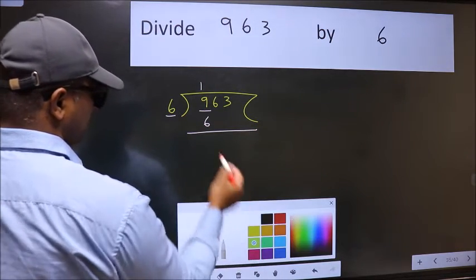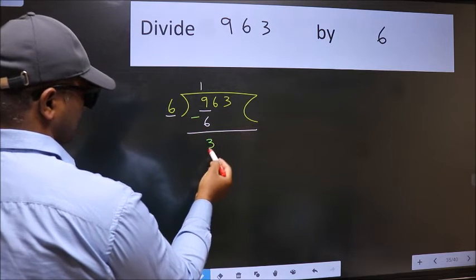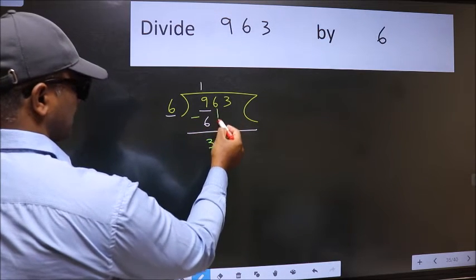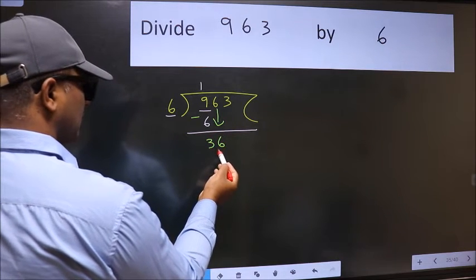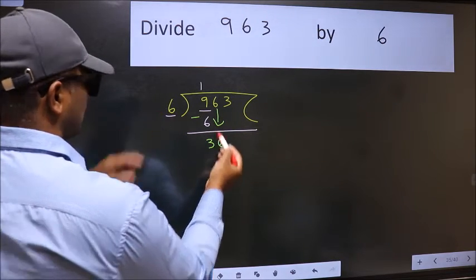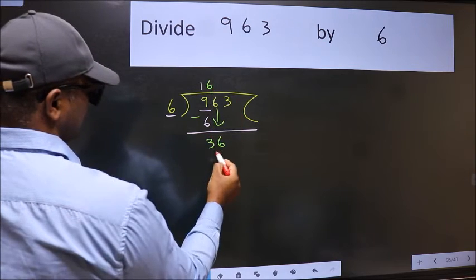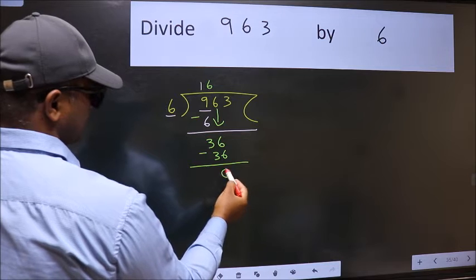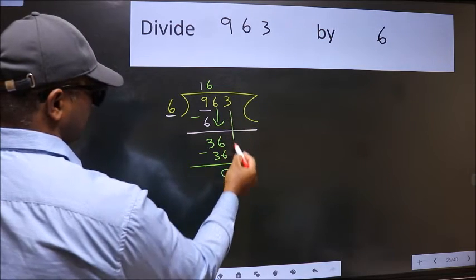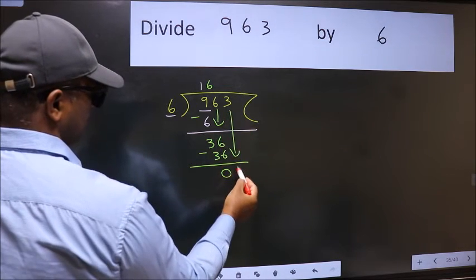Now we should subtract, we get 3. After this, bring down the beside number. So 6 down, 36. When do we get 36 in the 6 table? 6 times 6 is 36. Now we subtract, we get 0. After this, bring down the beside number. 3 down.